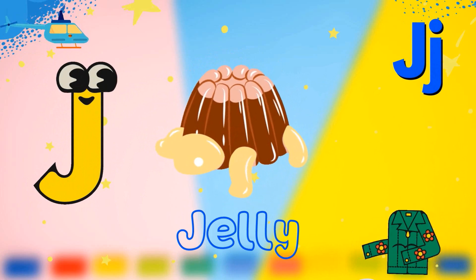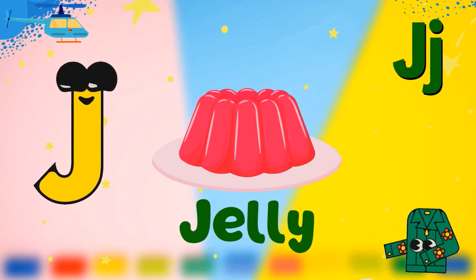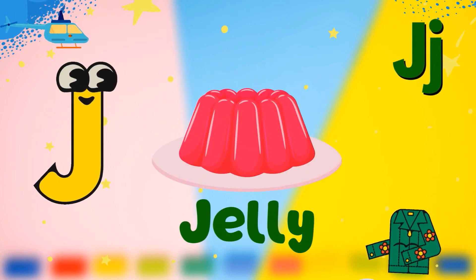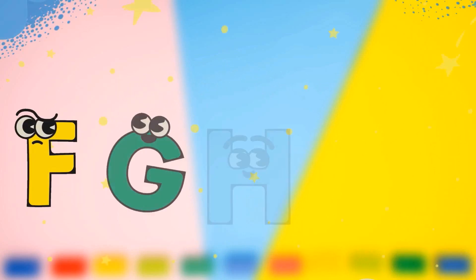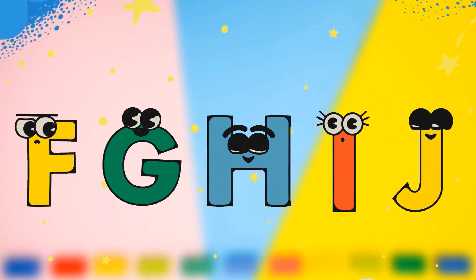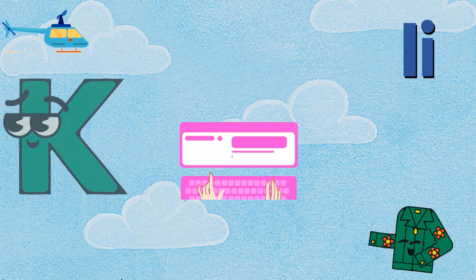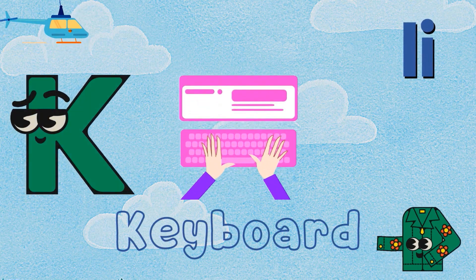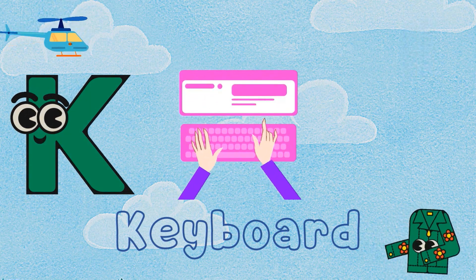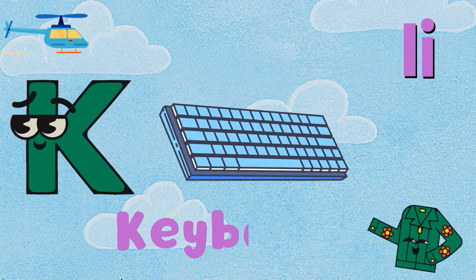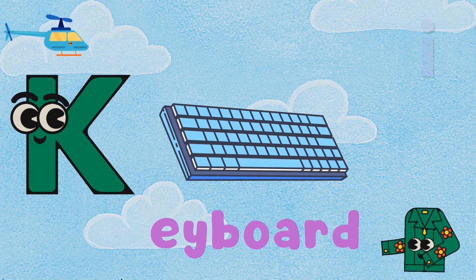J is for Jelly. J, J, Jelly. J, Jelly. K is for Keyboard. K, K, Keyboard. K, Keyboard.